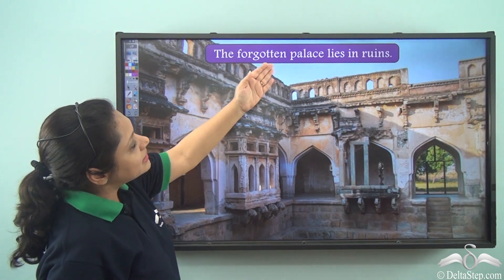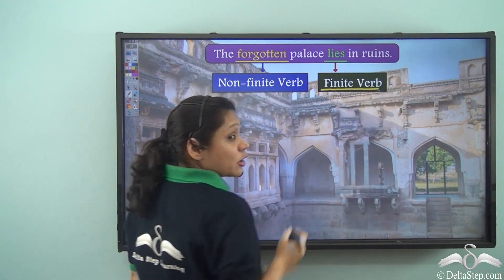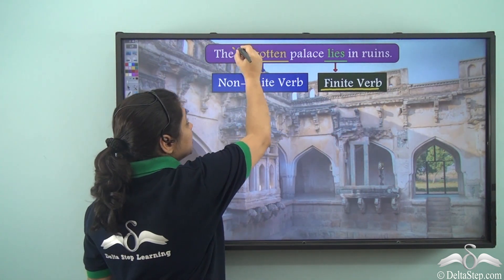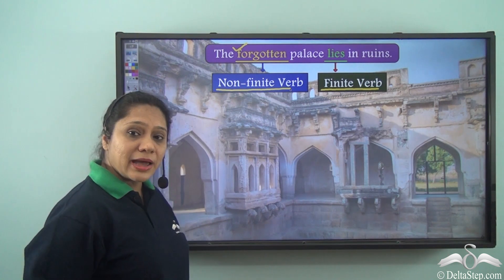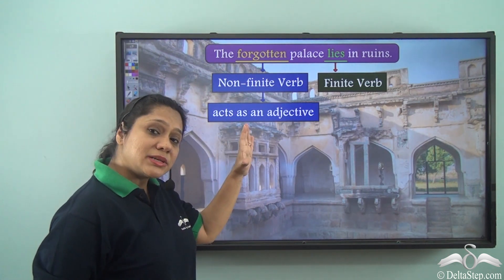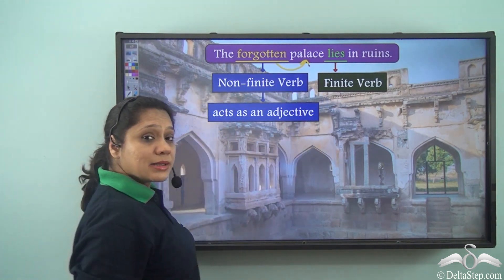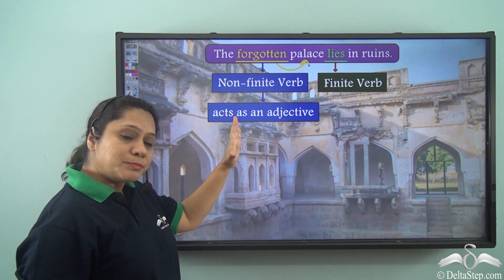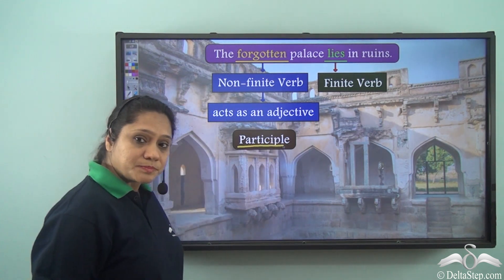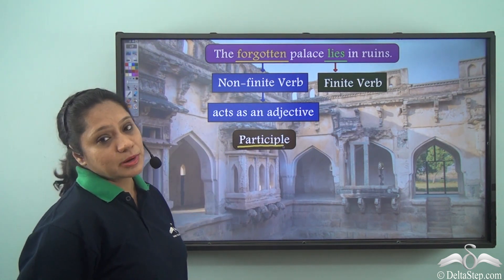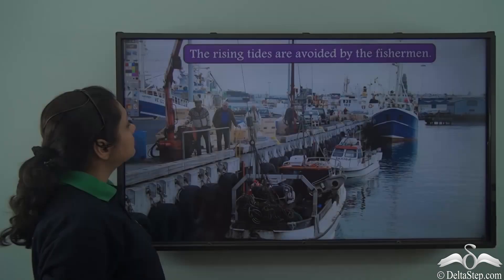'The forgotten palace lies in ruins.' In this sentence, 'lies' is the finite verb because it portrays a tense, but 'forgotten' is a verb form which does not portray any tense — hence it is a non-finite verb. 'Forgotten' acts as an adjective, describing 'palace.' So this is a non-finite verb form which acts as an adjective.